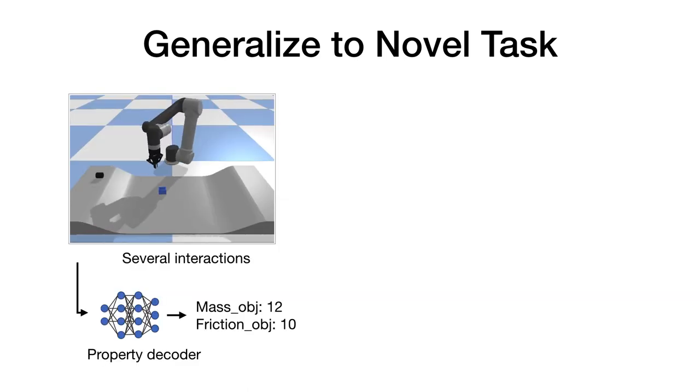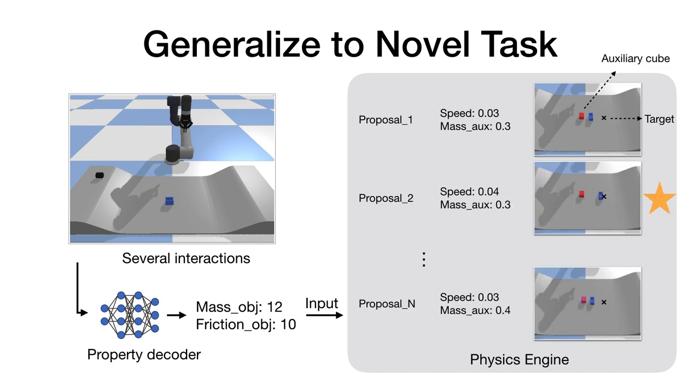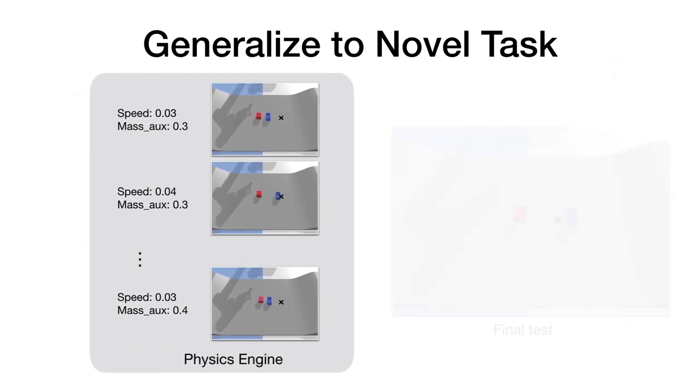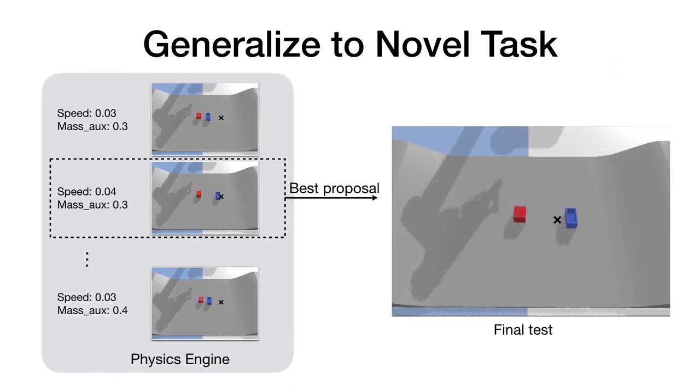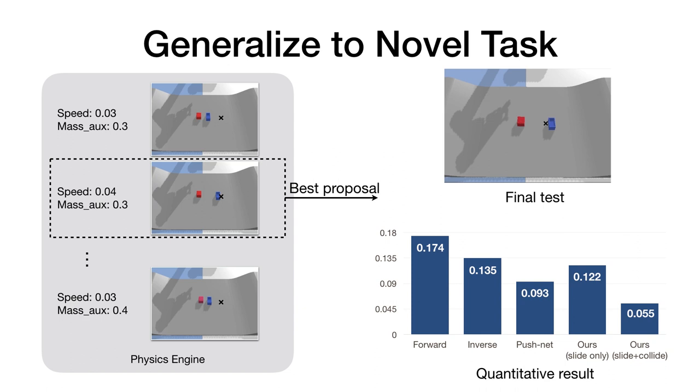First, the robot interacts with the second cube to decode its physical properties. Then we enumerate all possible pairs of mass and speed for the first cube and simulate their collisions in a physics engine. During testing, we choose the pair of parameters that gives the prediction that is closest to the goal state. Because our algorithm can more accurately decode physical properties, our algorithm achieves better performance in this new task as well.